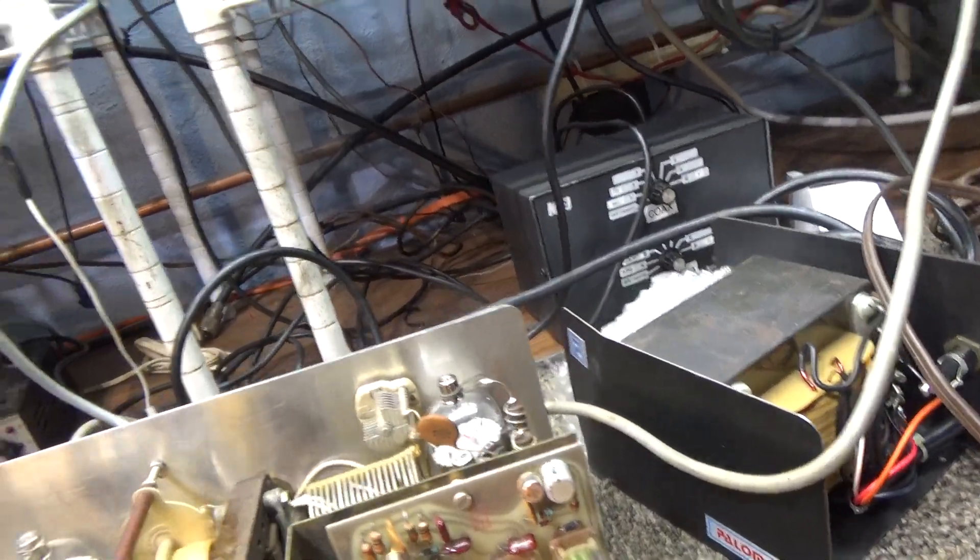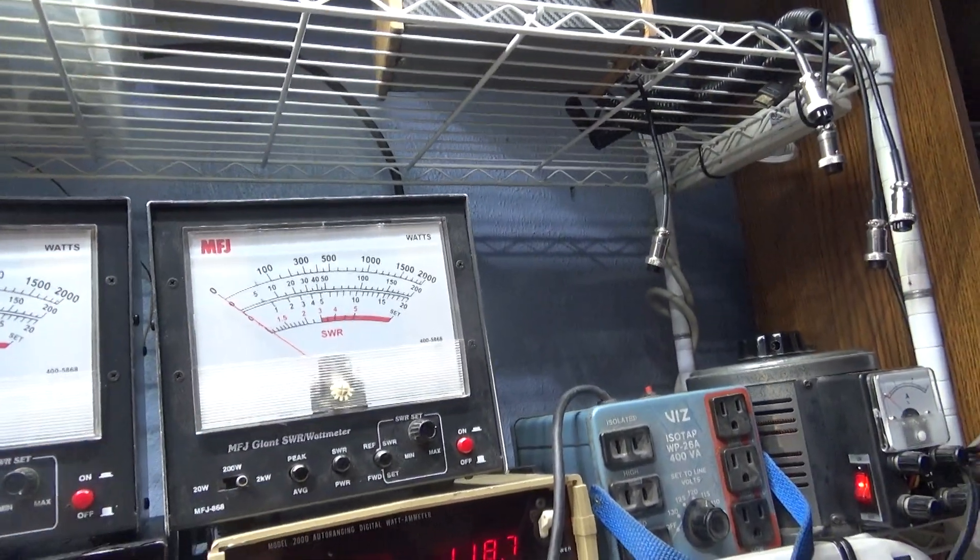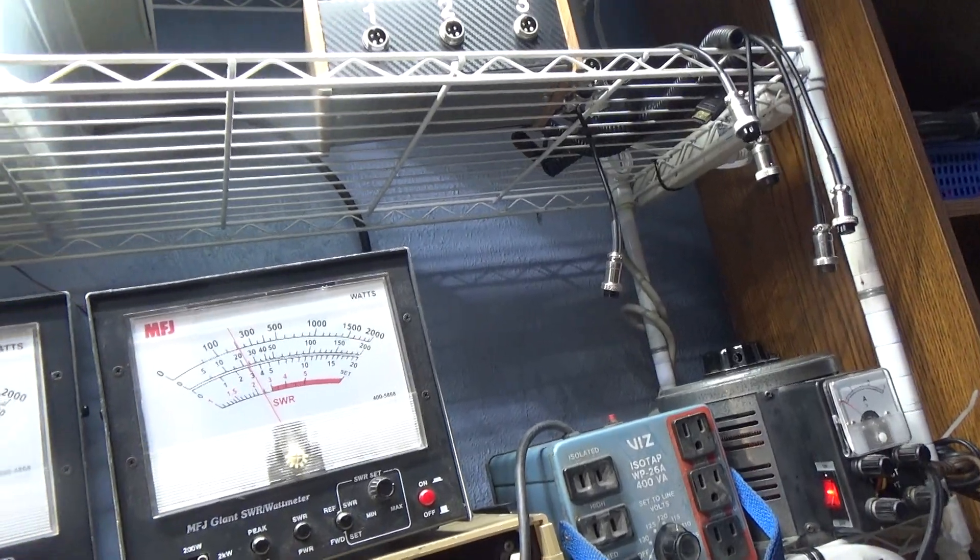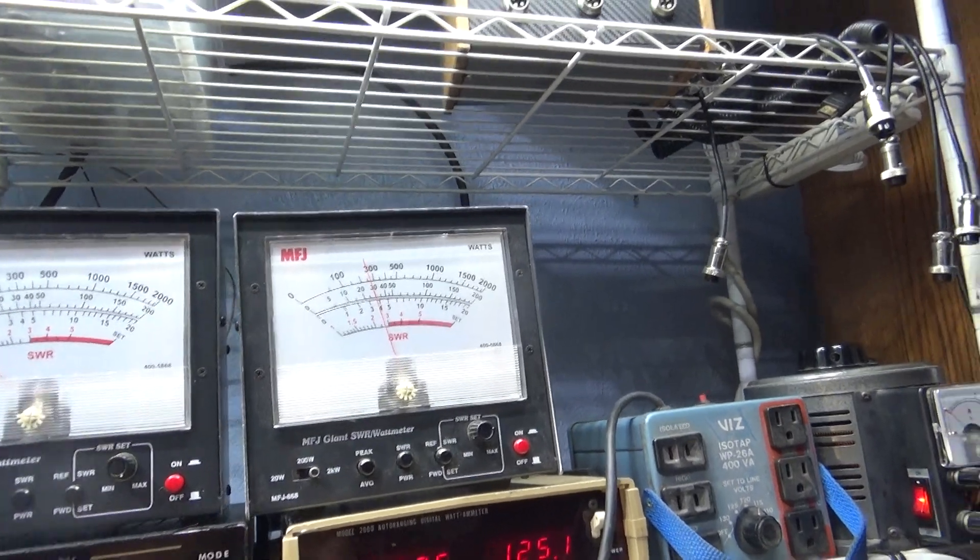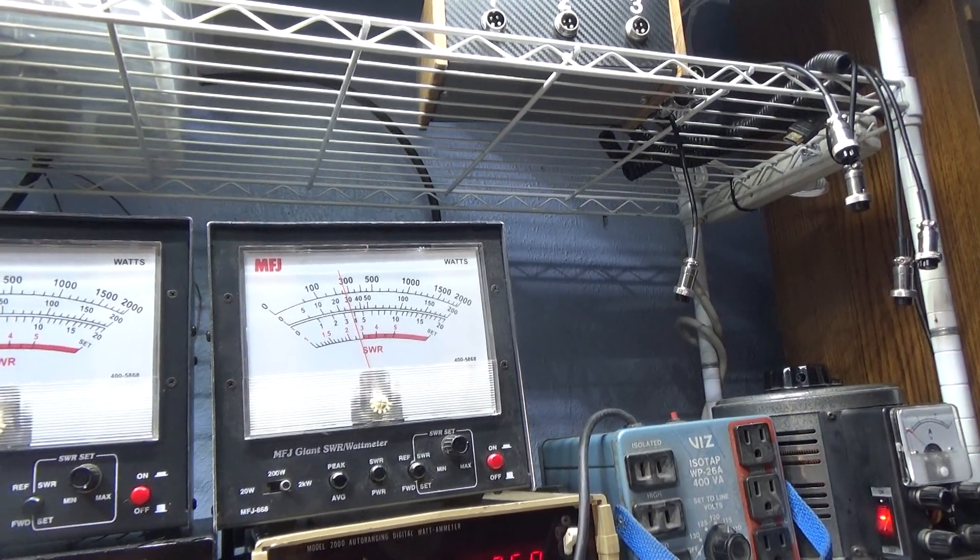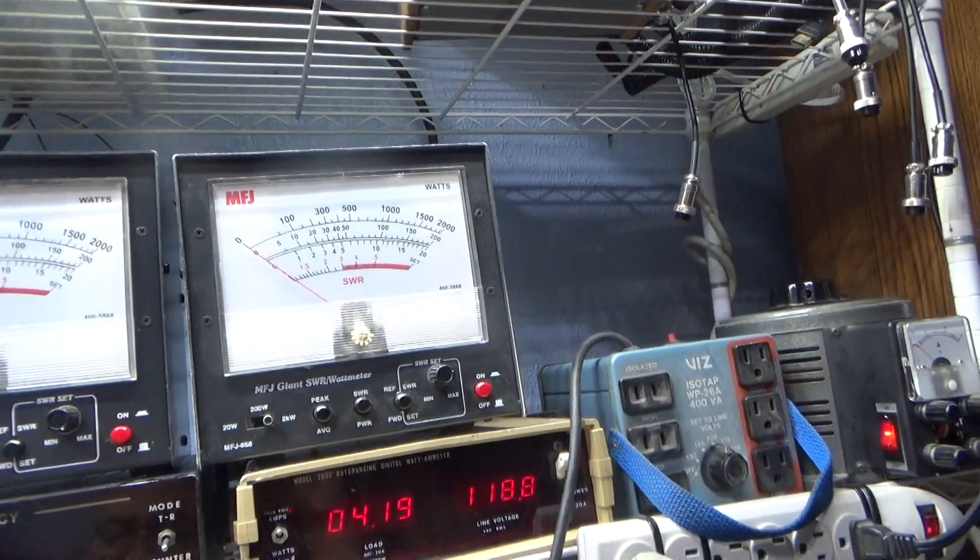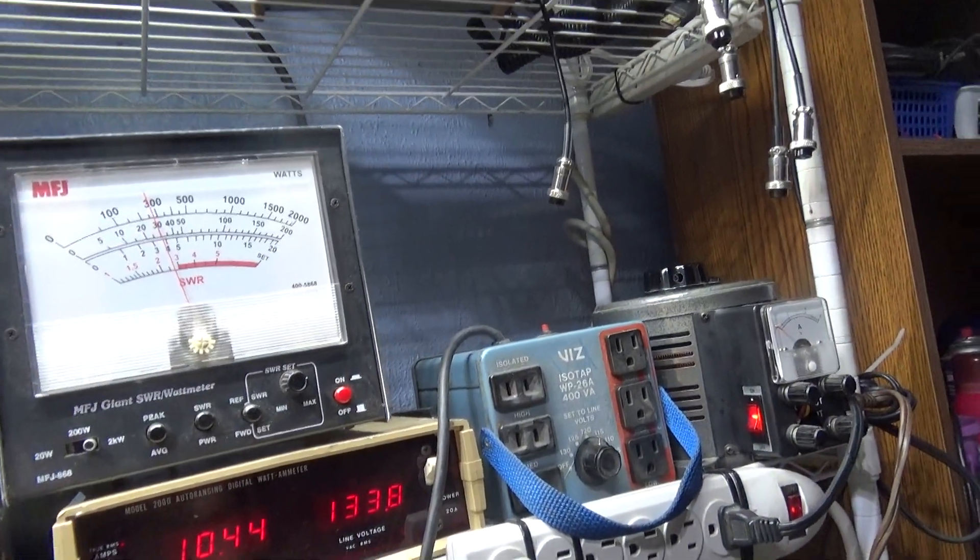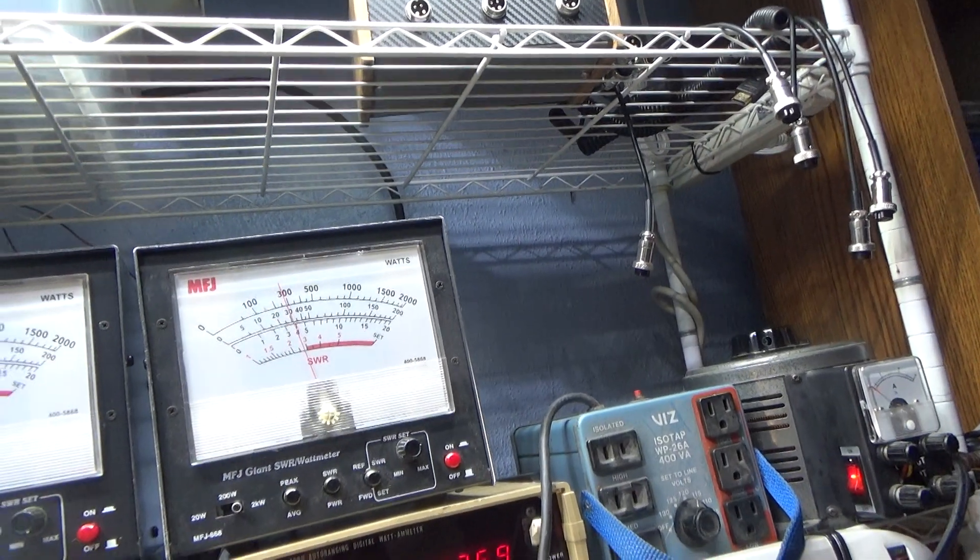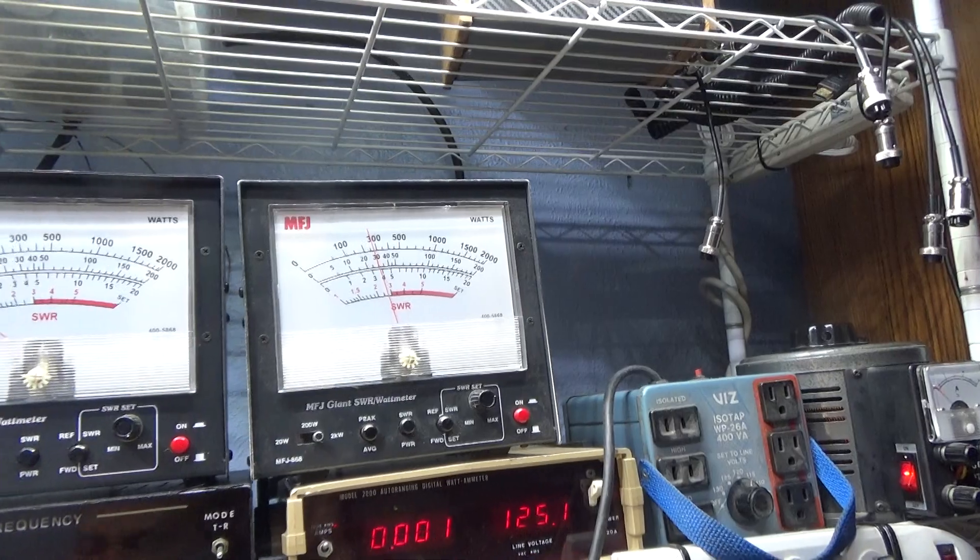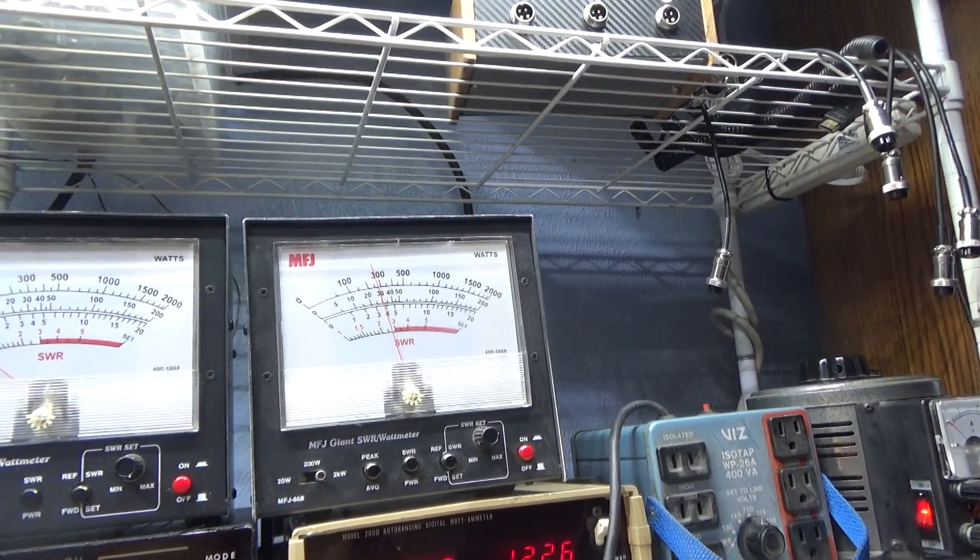So anyway, I put it on the high side and start over again. Let's get off the 200 watt scale. Dead key. Tune and load. Close to 300. Tuning load, and then we're going to do the tuner in the back. Very little difference. So we're dead keying about 300. We already did the input SWR, so we're not going to turn it over and do that one for the purposes of this video.